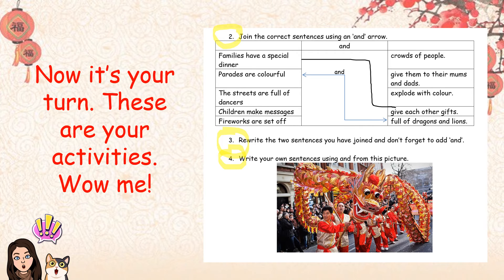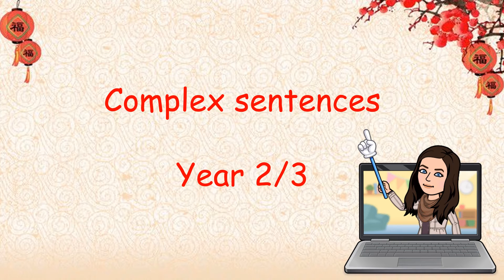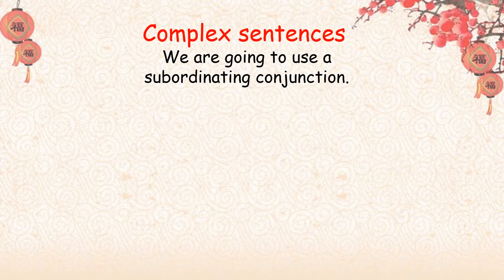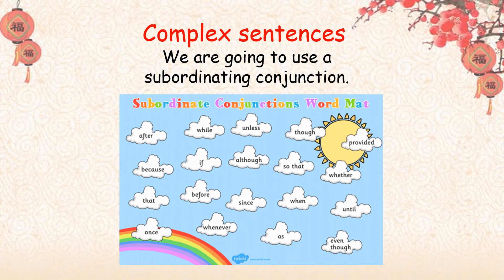And that is going to be complex sentences. Now, for a complex sentence, we're going to use something slightly different — not just 'and.' This is tailored towards Year 2 and 3. But if we've got any aspirational aliens in Year 1 who want to try this, then go ahead. A complex sentence uses a subordinating conjunction. What is a subordinating conjunction, I hear you say? It is one of these — something like 'after,' 'because,' 'if,' 'although.' It just extends our sentence and makes it a little bit more interesting.